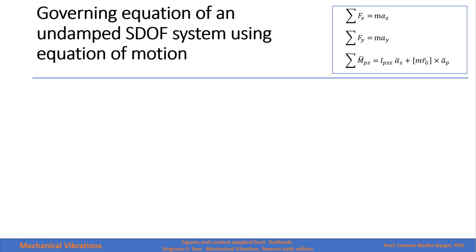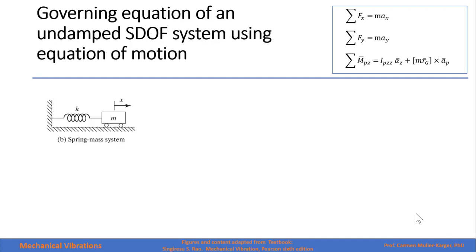Now let's find the governing equations of an undamped single degree of freedom system using Newton's law. As you recall, we will sum forces in the x direction, forces in the y direction, and take moments with respect to one point. For a rigid body, the rotational component is the mass moment of inertia times the angular acceleration, plus the mass times the distance to the center of mass, cross product with the acceleration of the point where we take moments.